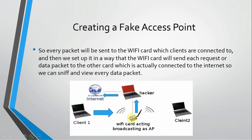Once the client connects to this Wi-Fi network, which is connected to our hacker device, we set it up so that when the client asks for google.com, the data packets are sent to this Wi-Fi card — acting as a router — and then forwarded to the hacker machine, and from there to the internet using the other card which is actually connected to the internet.